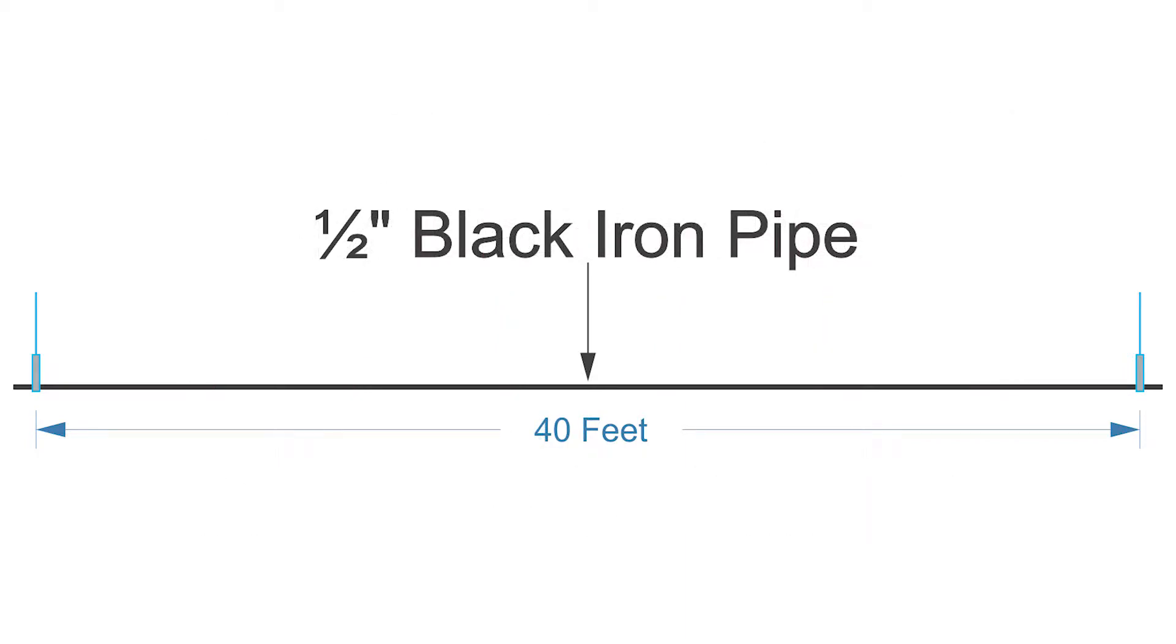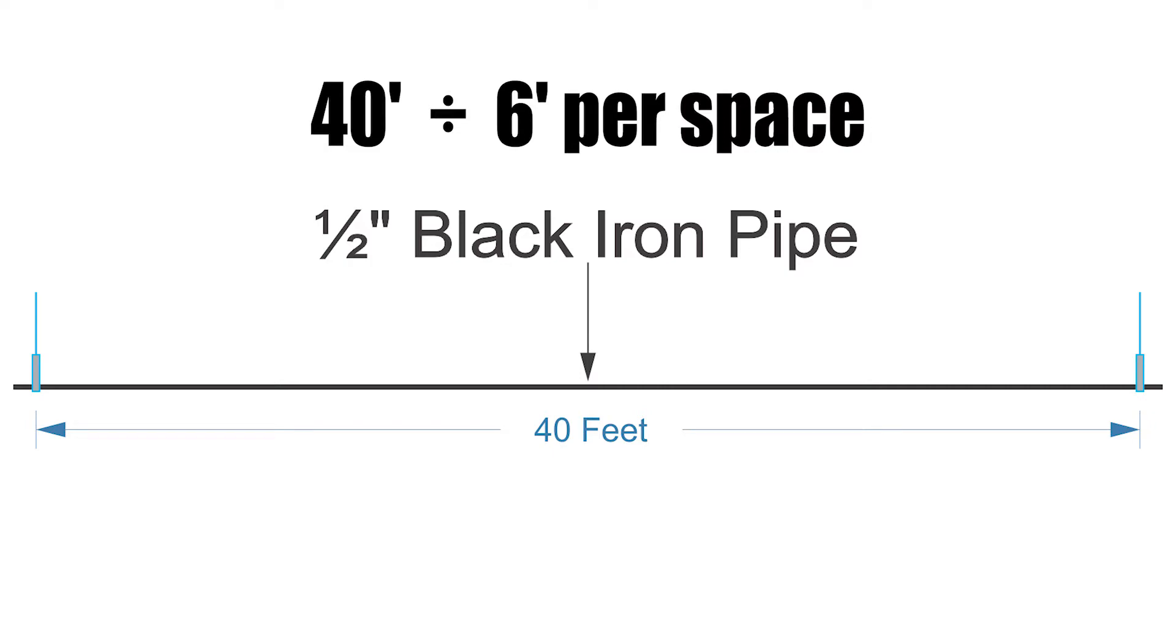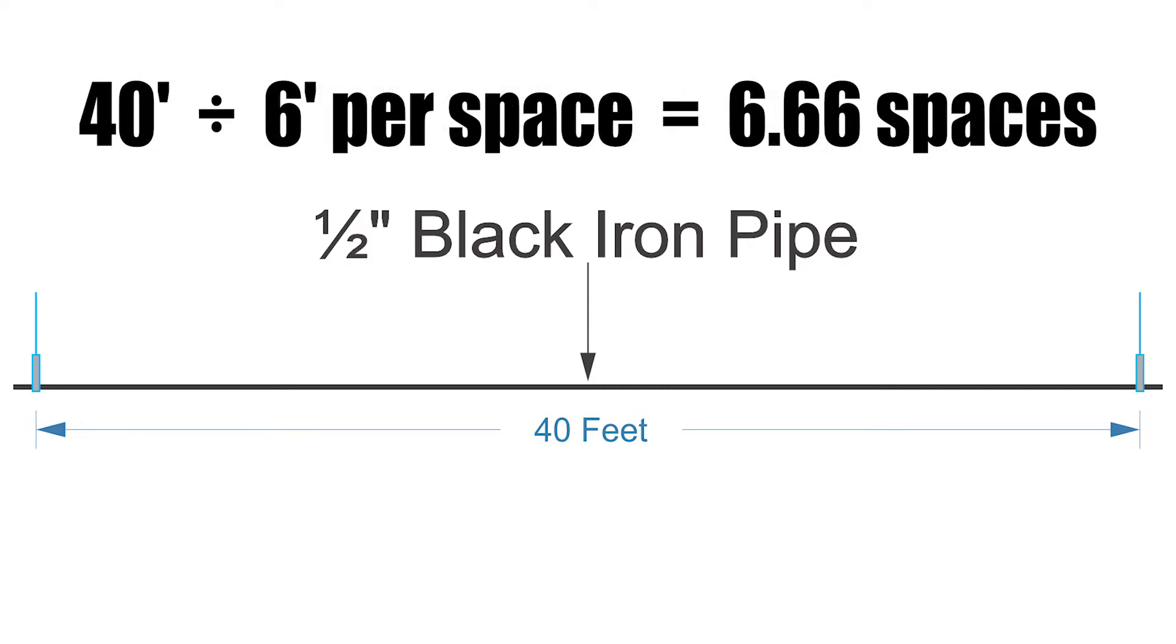In my next example I have 40 feet of half inch black iron pipe. Looking back at table 6-2, half inch black iron pipe is good to six feet spacing maximum. I take my 40 foot length and divide it by six, but I don't get a nice clean number. It equals 6.66 spaces.